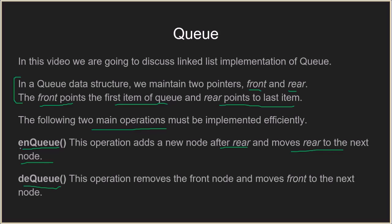Dequeue is responsible for removing an element. When we implement enqueue using a linked list, we first add a new node after the rear and then update the rear to this newly added node, which is the same as moving the rear to the next node. In the dequeue operation, it removes the front node and moves the front to the next node.